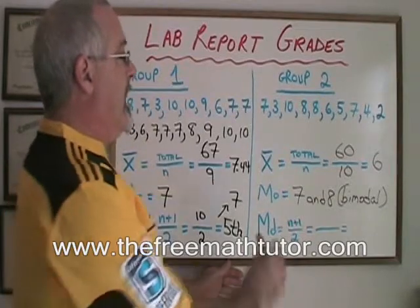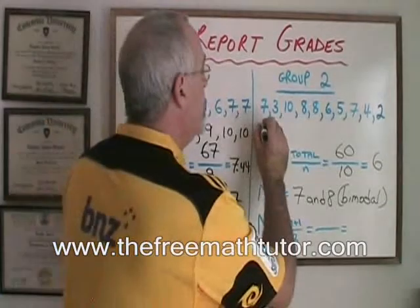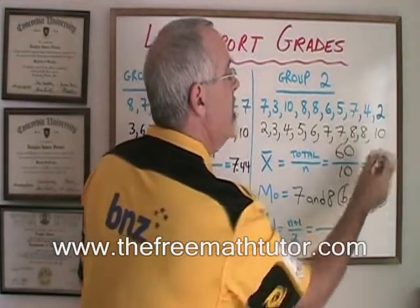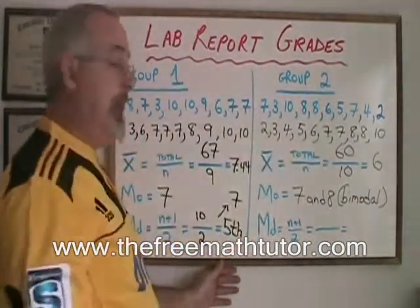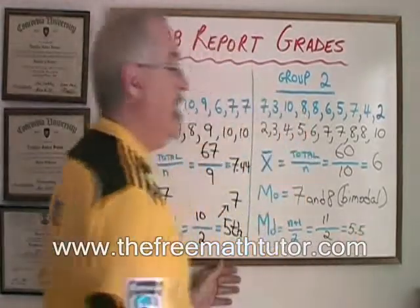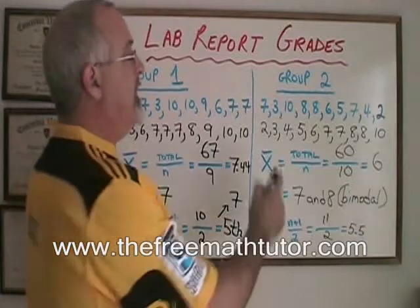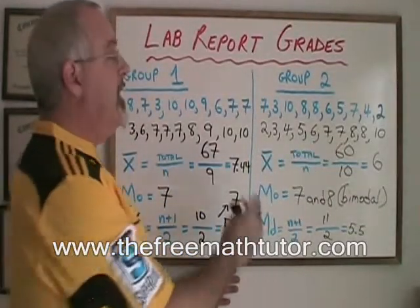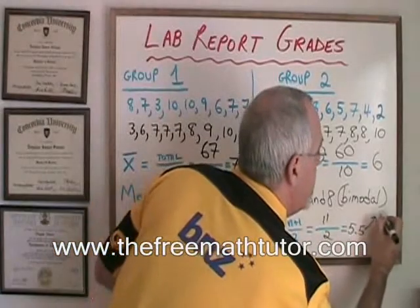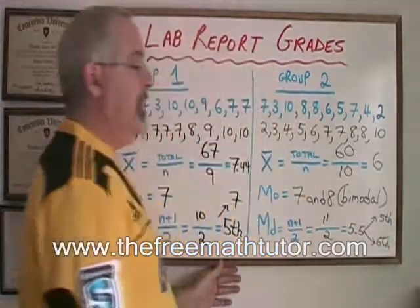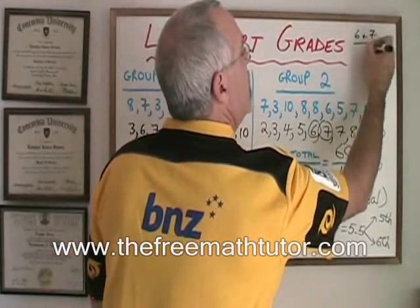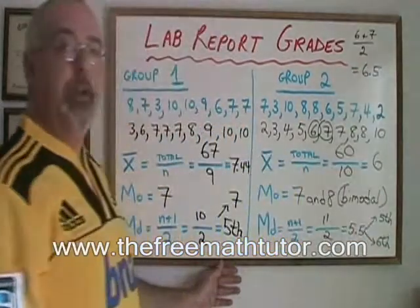Now the median. Again, I want to reorder all of the grades from lowest to highest. So we have a 2, 3, 4, 5, 6, two 7s, two 8s, and a 10. Applying (n+1)/2, because the sample size is 10 this time, gives us (10+1)/2 = 11/2 = 5.5. This does not mean that our median is 5.5. Because we have an even number of grades in this distribution, the middle position is not occupied by a single mark. What we have to do is find the two middle marks and average them. This tells us we are averaging the fifth and sixth marks: in this case, 6 and 7. So we do (6+7)/2, which gives us 6.5. Our median is 6.5.